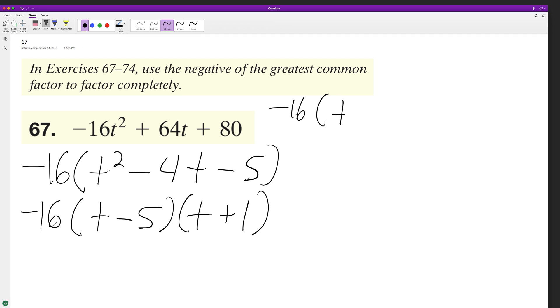Negative 16. We get t squared plus t minus 5t minus 5. So t squared minus 4t...